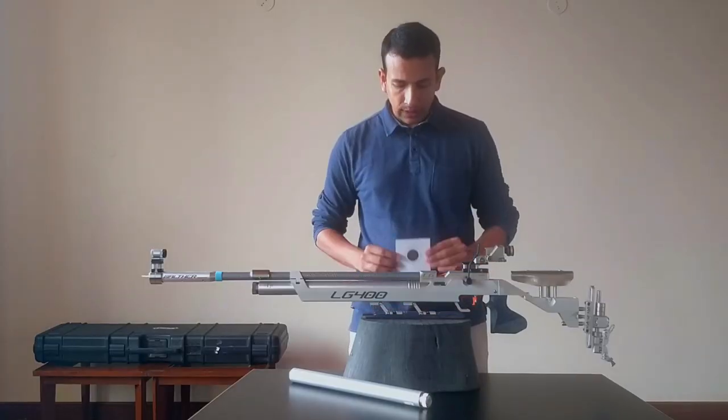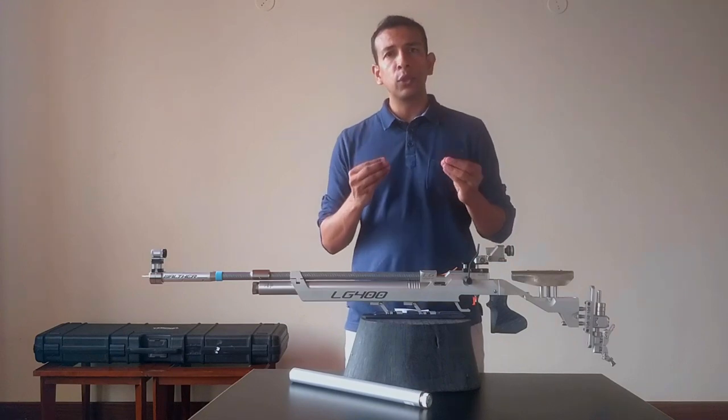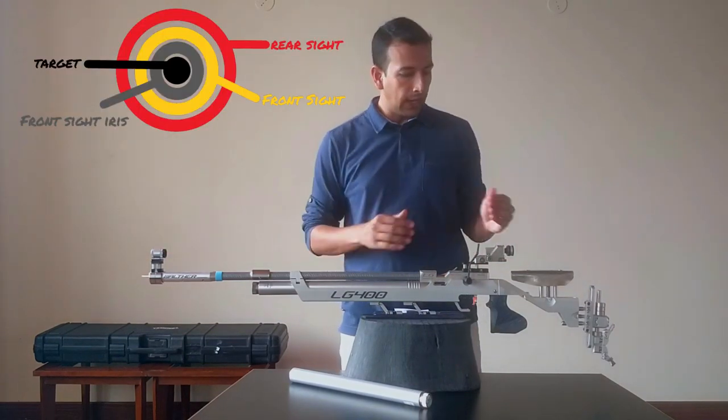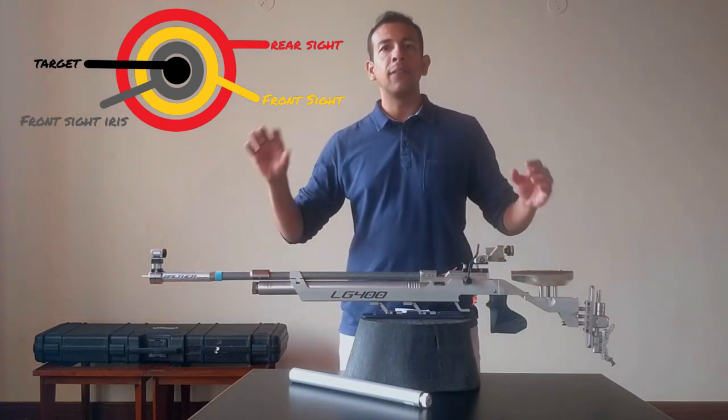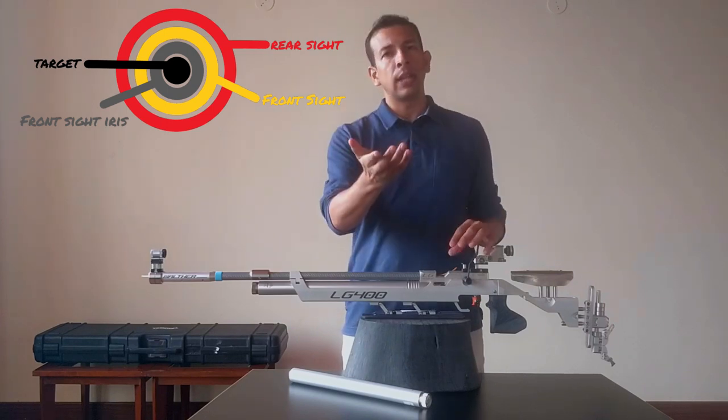And if you see the target, you can see it's circular. So, what we have to do is we align the front sight to the circular target. We align the pinhole of the back sight to the front sight. And when all these circles are concentric, then we will get the bull's eye.